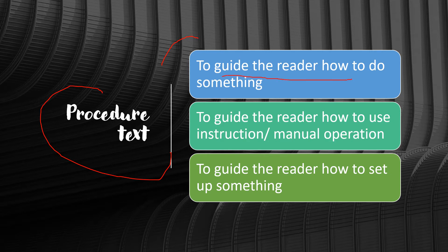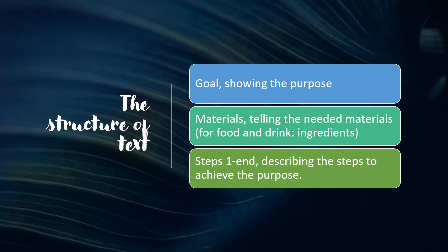...guide the reader how to do something, or to guide the reader how to use an instruction or manual operation. Next, to get the reader how to set up something. Basically, procedure text is to guide the reader to do something step by step. That's the purpose of procedure text.